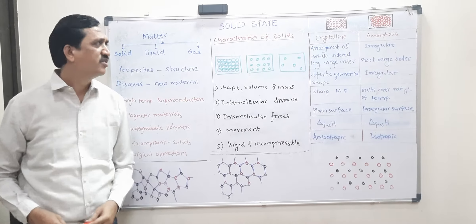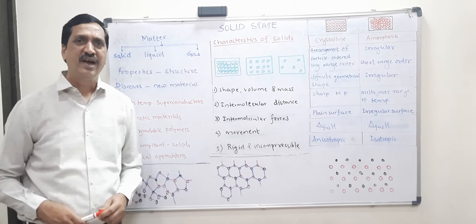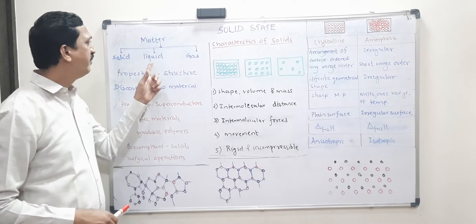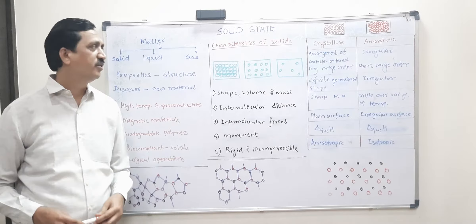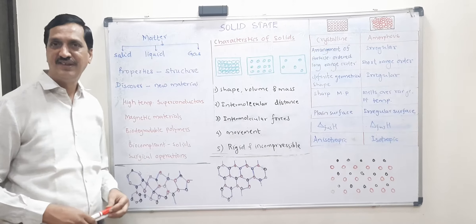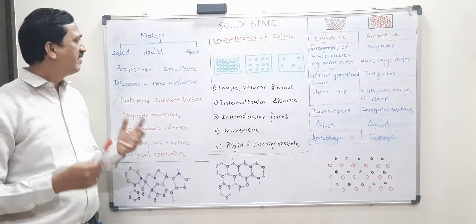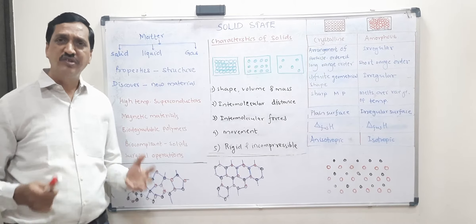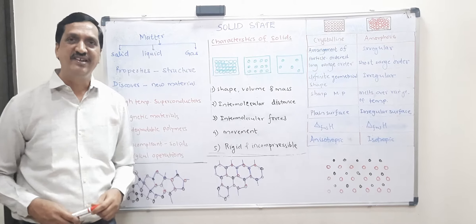You are studying since school days that these are the three states of matter. Now just have a look around you and try to see how many liquid or gaseous things you can see. You can see very few things, because the stuffs or the things which we use mostly they are in solid state. So solid state is the most widely used state.